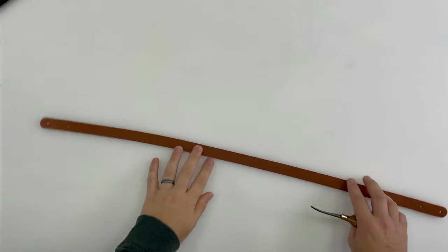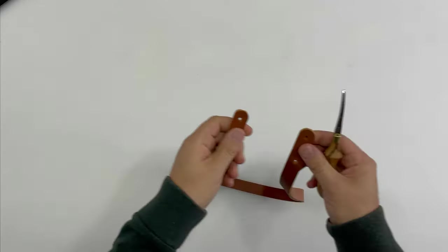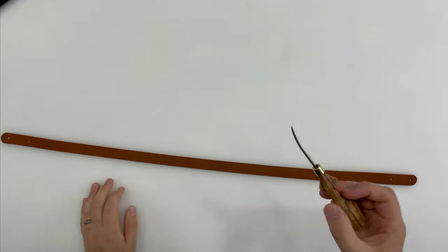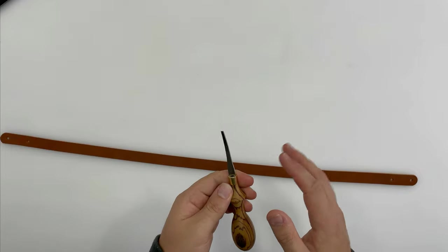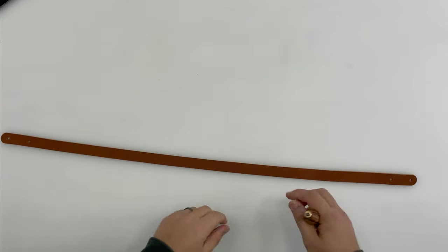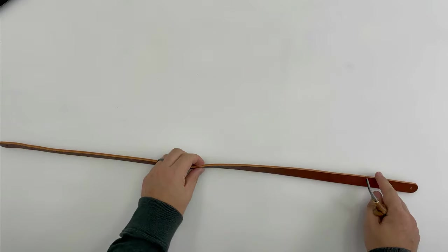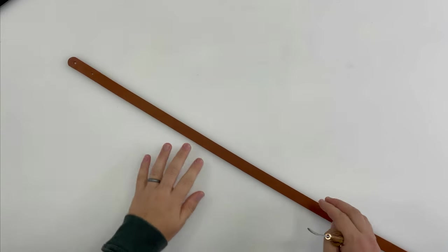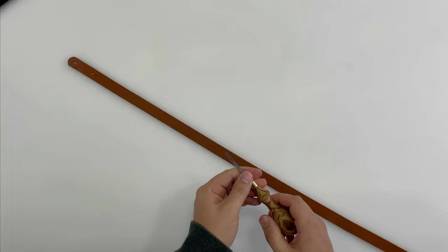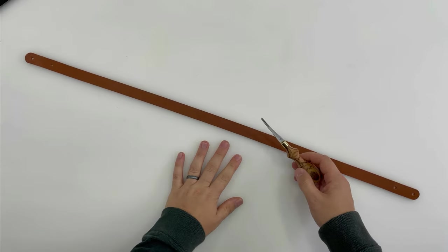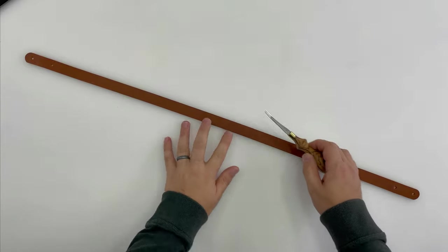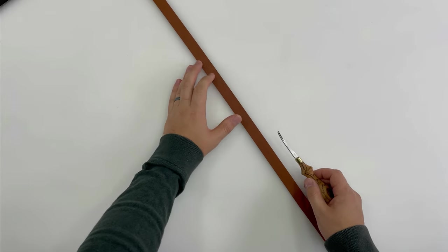The next step after we've done our rounded edges is to get our edge beveller. This is number three which is kind of an average size - you can go smaller and bigger depending on how thick your strap is. My tip with this is try to do it in one continuous motion and you'll find you'll get the best finish.